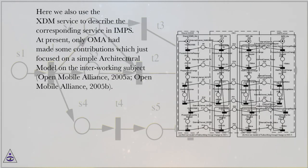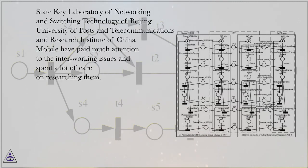As there is almost the same information within Simple and IMP-S, it is possible for them to interwork. A bi-directional protocol mapping to enable the exchange of XDM information is proposed to perform the interworking functions, Zhang 2007. Also see the mapping described in general in Section 3. Here we also use the XDM service to describe the corresponding service in IMP-S.